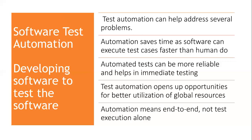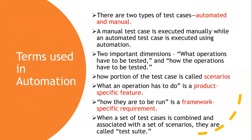Next, automation is useful for better utilization of global resources. Whenever we do manual testing, we need the test engineer's presence. But in case of automated testing, it can be done by itself and is available around the clock — 24 hours per day, seven days per week. Next, automation means end-to-end, not test execution alone. That is, we should not limit development activities to just executing test cases — it starts with automation. Next are the terms used in automation.